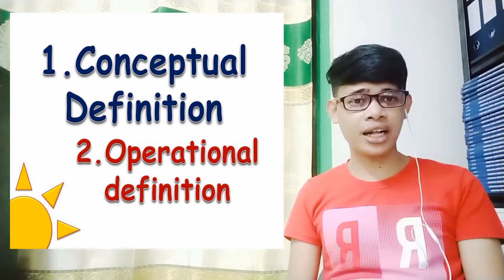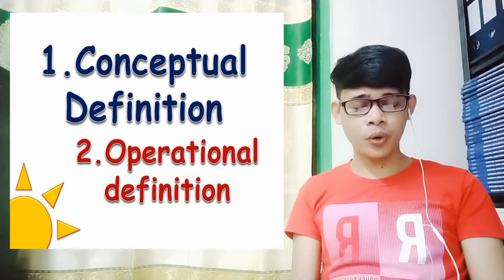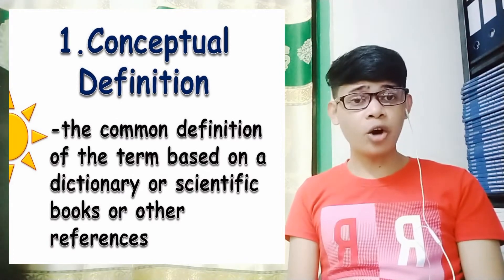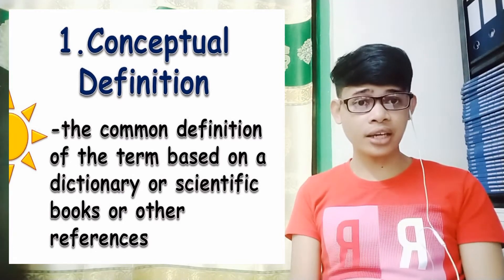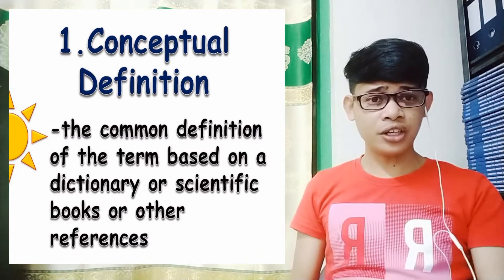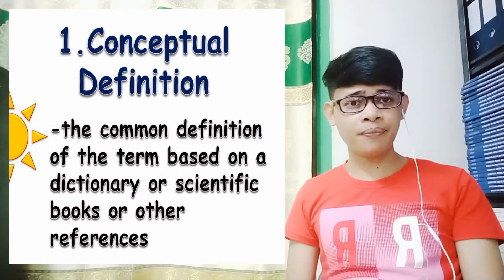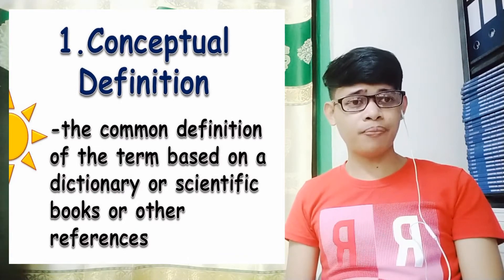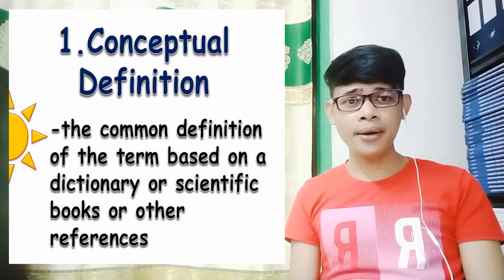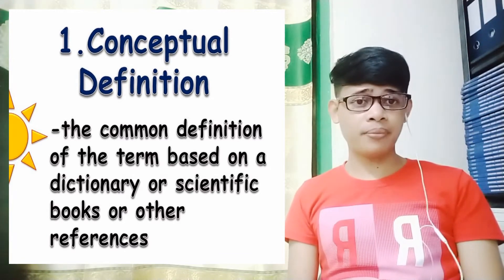As we progress in this video I will give you the definition of each type along with examples. We will start with the conceptual definition. Conceptual definition is defined as the common definition of the term that is based on a dictionary, a scientific book, or other references. You can easily identify it because it has an author and a date published.